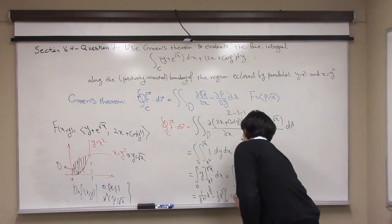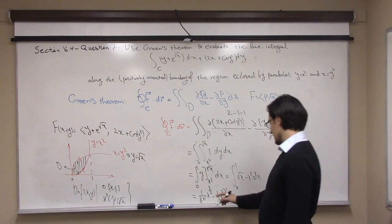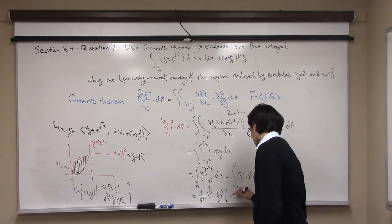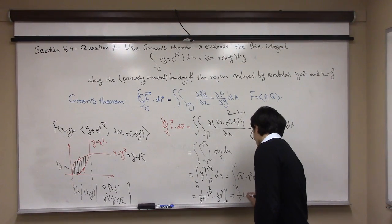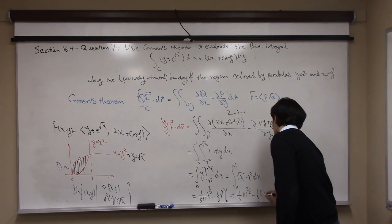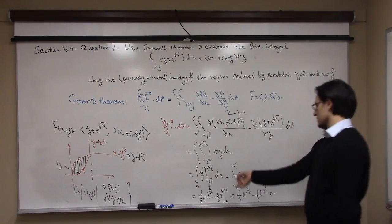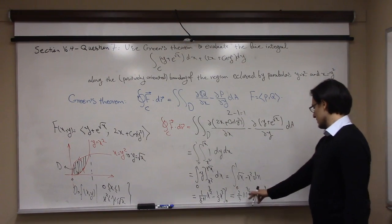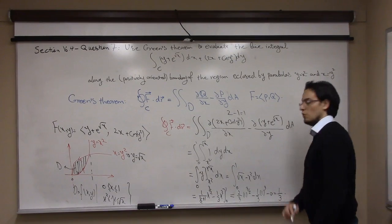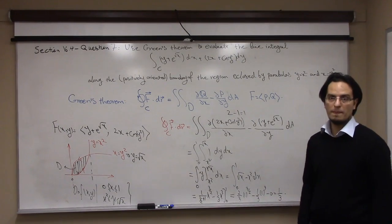Plugging in the bounds: at x equals 1 we get two-thirds times 1 minus one-third times 1. Plugging in 0 gives 0. So the result is two-thirds minus one-third, which equals one-third.